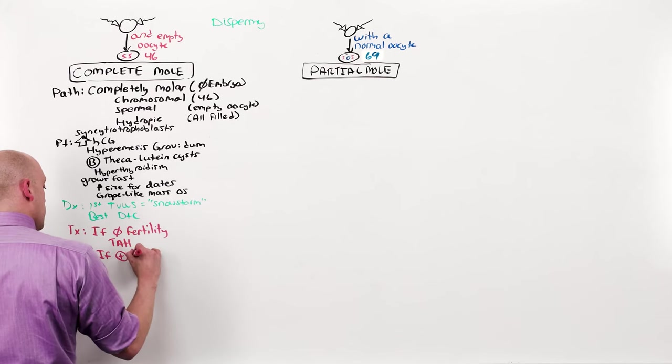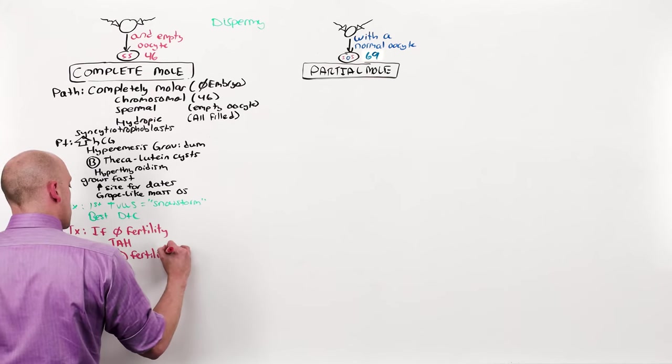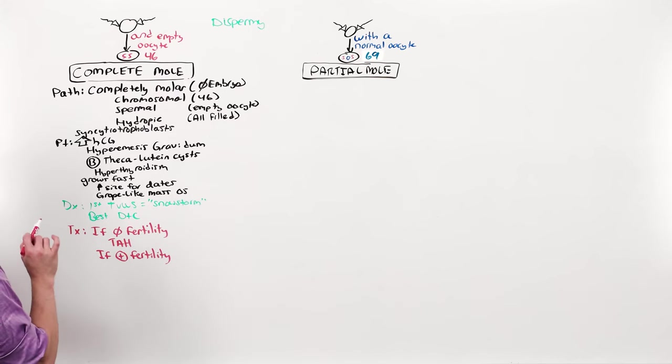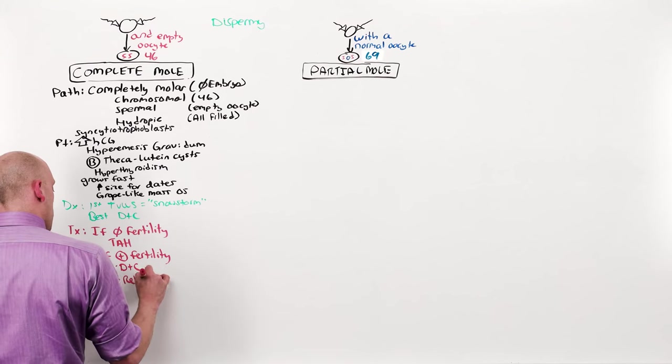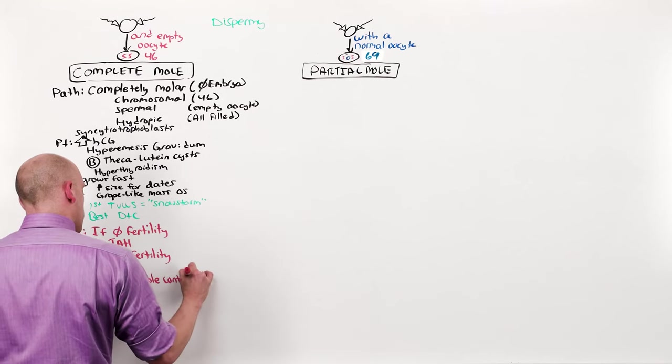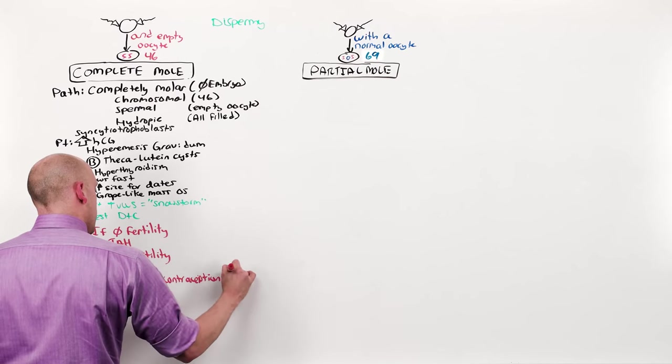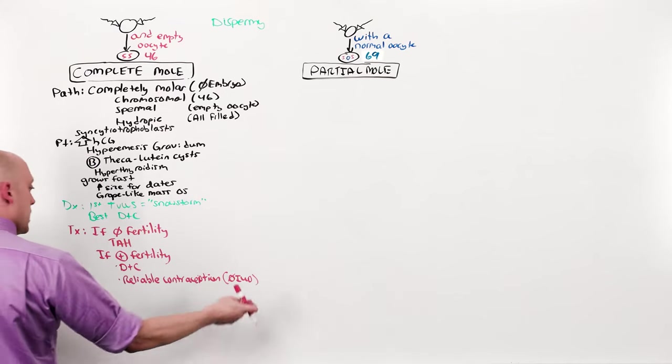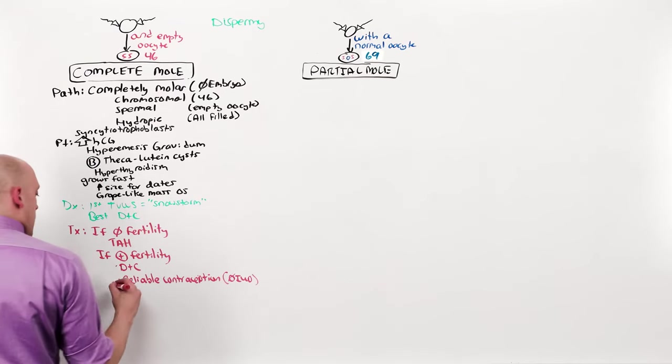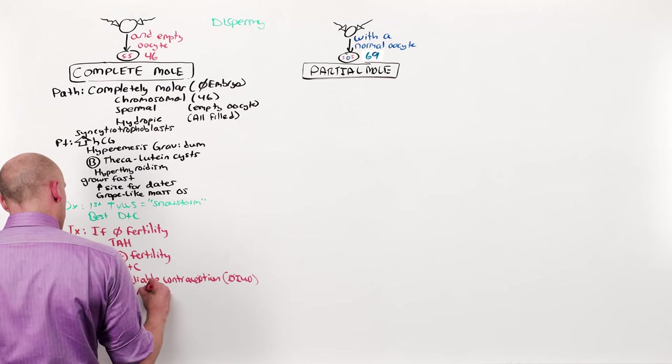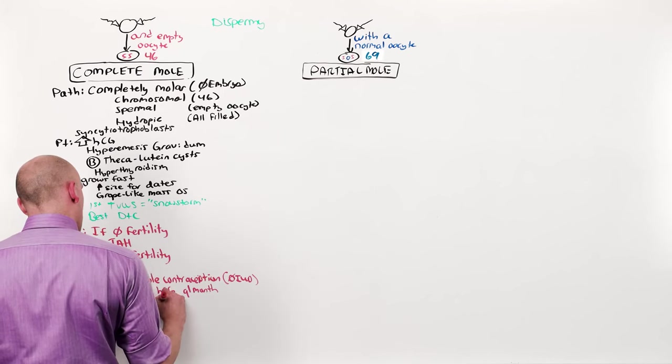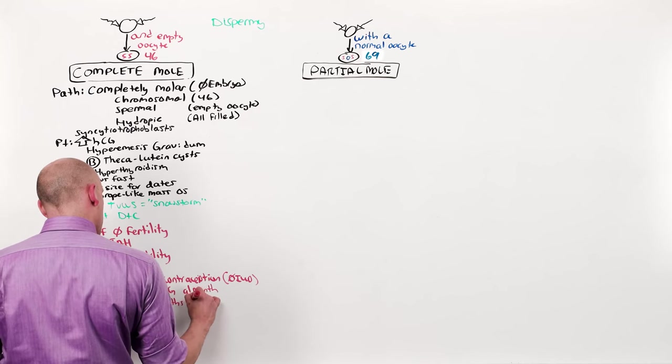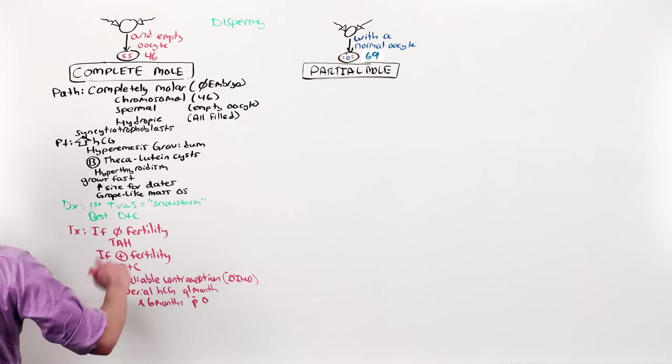If she does desire future fertility, we need to make sure she is clear of this thing, the gestational trophoblastic disease, and does not develop a gestational trophoblastic neoplasm. That means that after doing the D&C, find reliable contraception that is not an IUD. This diagnosis kind of contraindicates the IUD, not that the IUDs are bad. And then she gets serial HCGs every month for six months once she reaches zero.